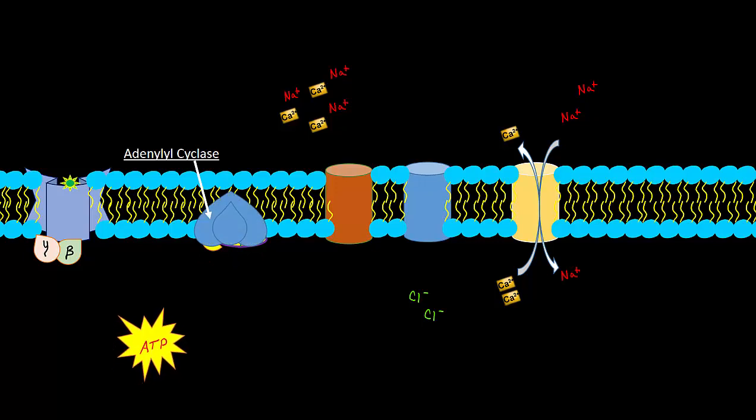So adenylyl cyclase is activated to then take ATP and make cyclical AMP, and that cyclical AMP then goes to our cyclical AMP gated ion channel.